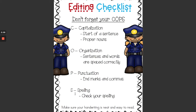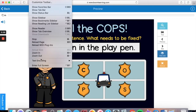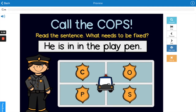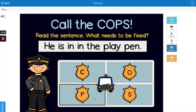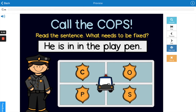So now that you know what COPS stands for with our editing, we are going to practice using this strategy by playing a game. We are going to play this game — call the COPS — on our writing. We are going to read the sentences and then decide what part of COPS needs to be fixed: is there a capital letter that needs to be capitalized, something wrong with the organization of the words, punctuation that needs to be added, or something wrong with the spelling or spacing of words? Let's give it a try.